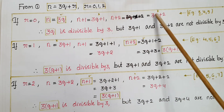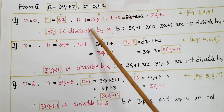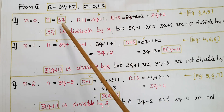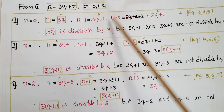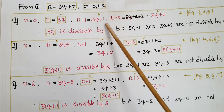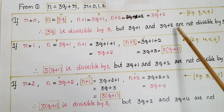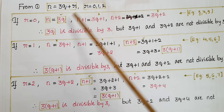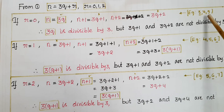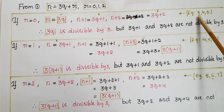From these three consecutive integers 3q, 3q+1, and 3q+2: 3q is divisible by 3 because 3q is a multiple of 3. But 3q+1 and 3q+2 are not divisible by 3. For example, if q = 1 then n = 3, the next consecutive integer is 4, and the next is 5. Out of these three numbers only 3 is divisible by 3.